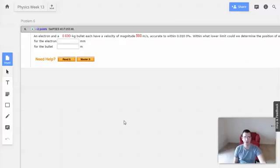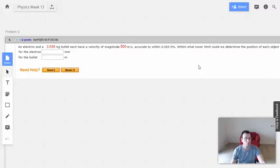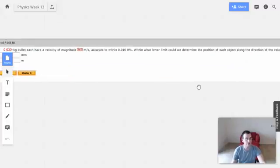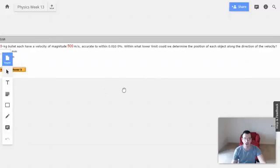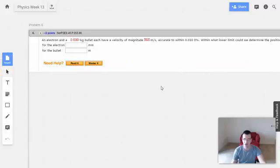Week 13, problem 6. An electron and a 30-gram bullet each have a velocity of magnitude 500 meters per second, accurate to within 0.01%. Within what lower limit could we determine the position of each object along the direction of the velocity?